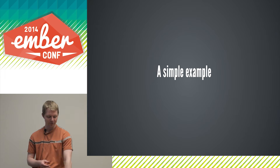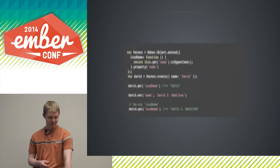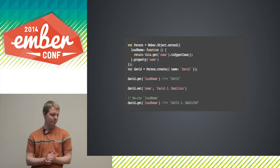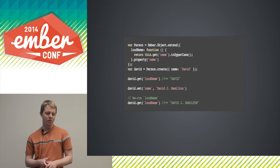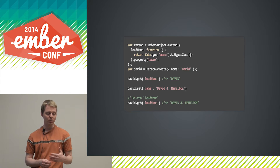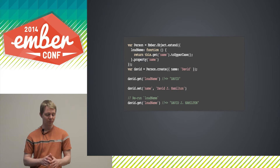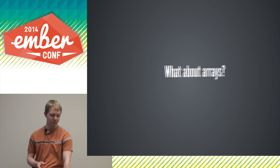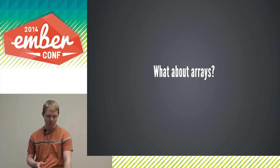Here's a very simple example. You have a person with a name, and a computed property loudName that depends on name — it's just the same thing in all caps. The important point is that when we change the dependent property, when we set name, there's no sense of partial recomputation for the computed property.